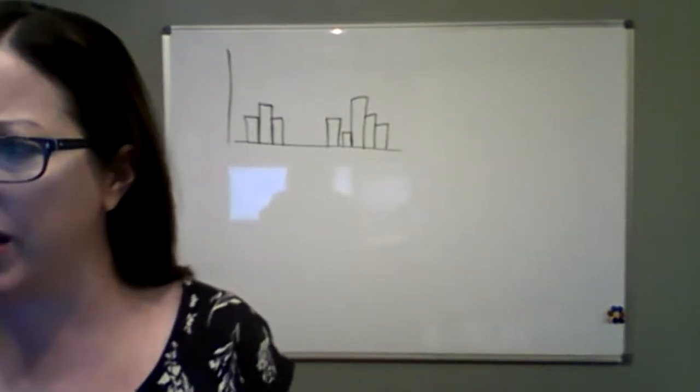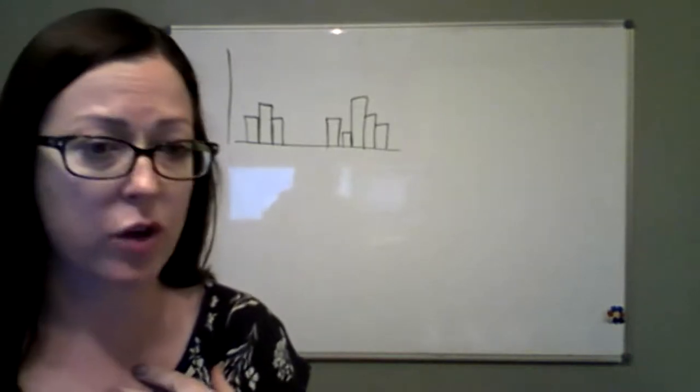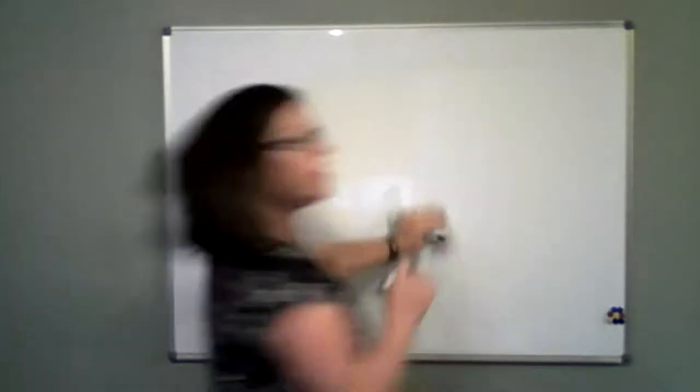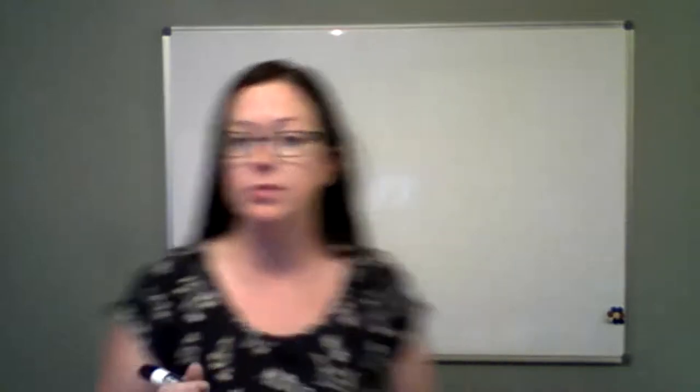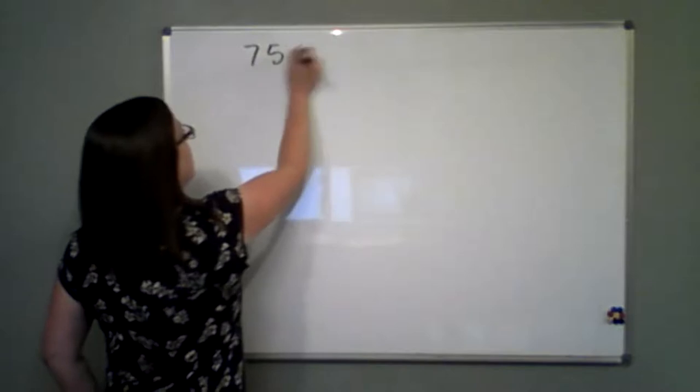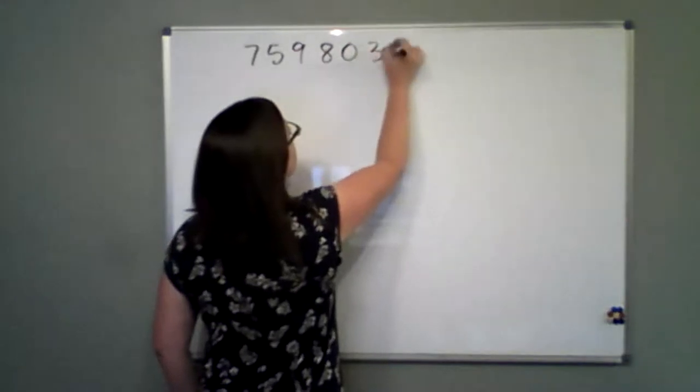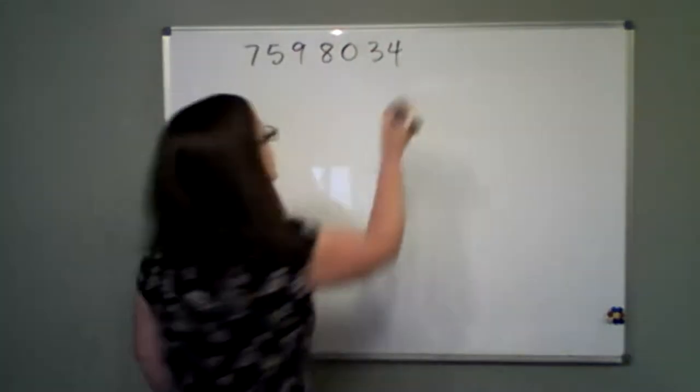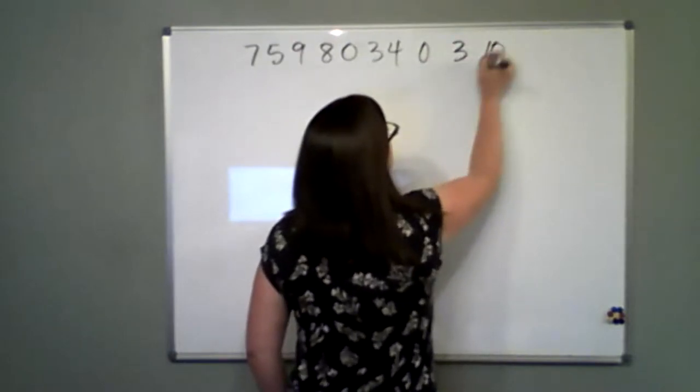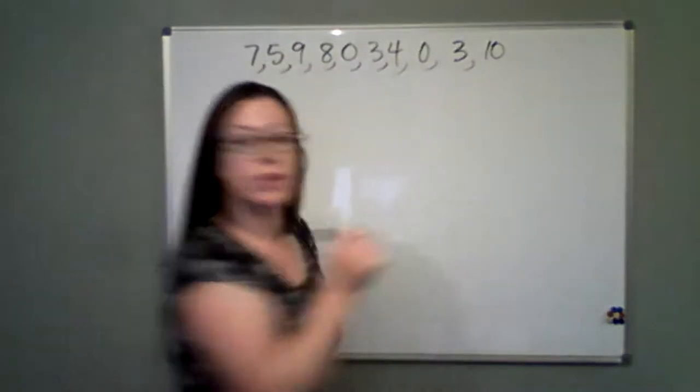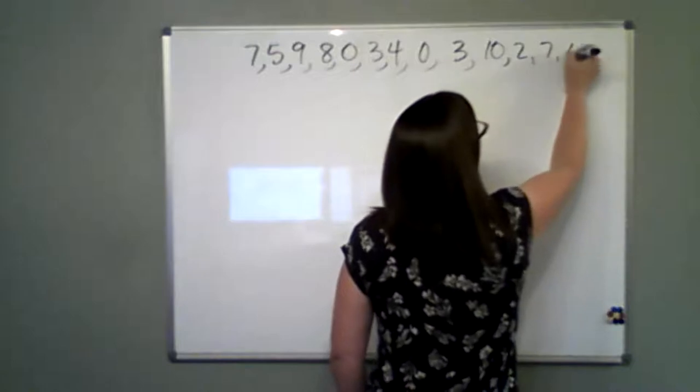We are then given – so for me, I'm looking at my question two. We're given a range of data. Okay, so Carissa's playing a basketball game and her number of shots that Carissa took in consecutive basketball games was a 7, a 5, a 9, 8, 0, 3, 4, 8, 0, 3, 4, 0, 3, 10, 0, 3, 10.